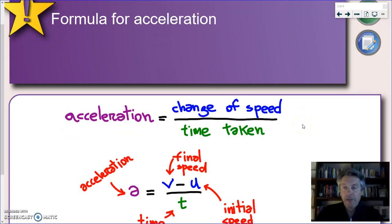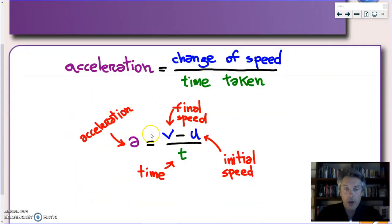In practice we're going to use this formula. As you can see I've replaced the words with symbols, so A stands for acceleration, T stands for the time taken and here you see a difference, V minus U. What does that mean? It means that every time you have a change of speed, you have to compare your final speed, which is V, with initial speed, which we will call U.